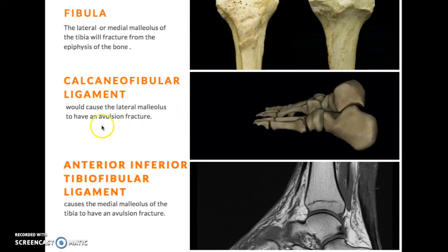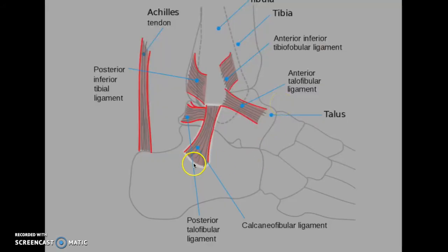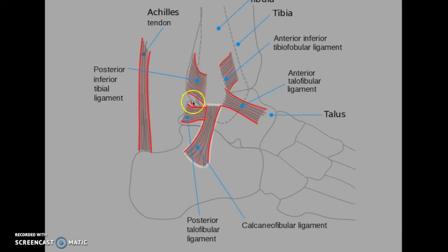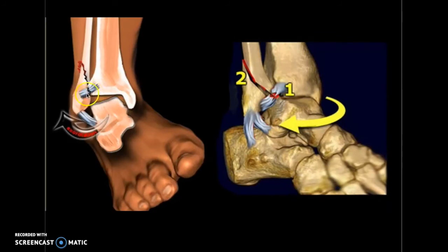The calcaneofibular ligament and the anterior inferior tibiofibular ligament usually aid in pulling the bony attachment off. The calcaneofibular ligament runs from the calcaneus to the fibula and is usually stronger than the tibiofibular ligament. The tibiofibular ligament usually tears while the calcaneofibular ligament pulls this part of the fibula off from the diaphysis. As you can see here, the anterior tibiofibular ligament is torn and the calcaneofibular ligament is pulling the bony attachment away. This is the most common type of avulsion fracture of the ankle, though vice versa can happen as well.